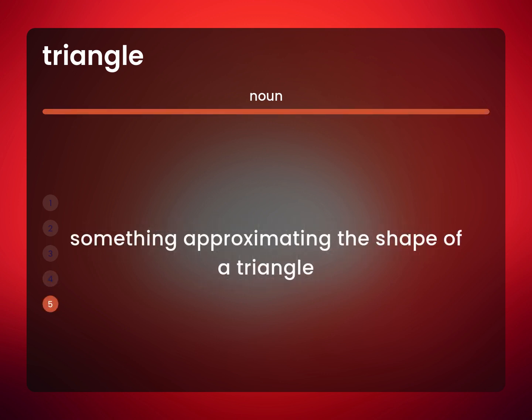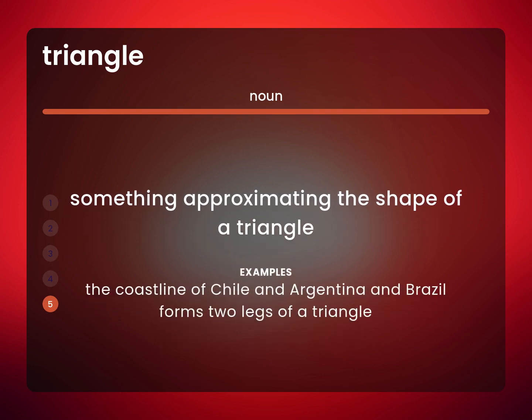Something approximating the shape of a triangle. For example: the coastline of Chile and Argentina and Brazil forms two legs of a triangle.